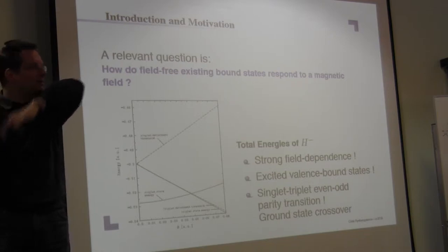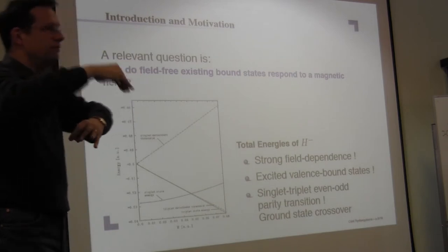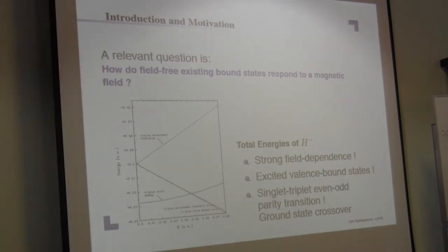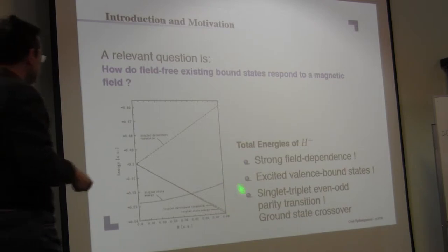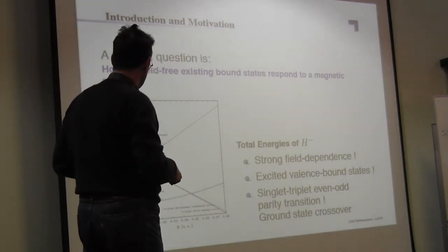Triplet goes down is clear because there's already a Zeeman shift which lowers the energy due to the spin triplet term.